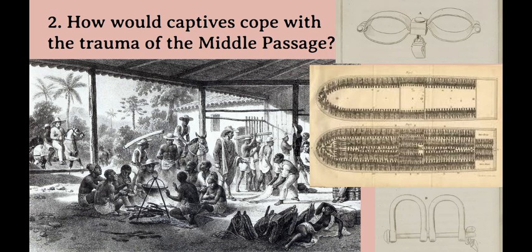African captives endured sickening cruelty, crowded and filthy conditions, whippings and beatings, and diseases. They were often not well fed, but more often than not captives would refuse to eat, going on hunger strikes as a manner of protest against their condition. Suicide and captives jumping overboard was also a major problem on these journeys. Many people have estimated that upwards of 20% of the captives taken on the Middle Passage died along the journey.